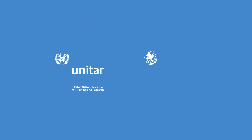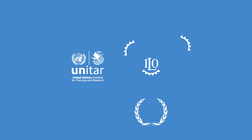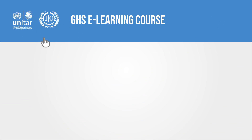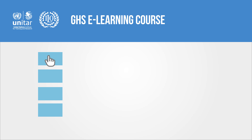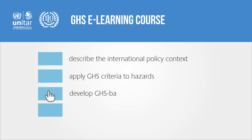The United Nations Institute for Training and Research, UNITAR, in collaboration with the International Labour Organization, ILO, has run an e-learning course on the GHS since 2012, helping participants to describe the international policy context, apply GHS criteria to hazards, develop GHS-based labels, and develop hazard communication strategies.